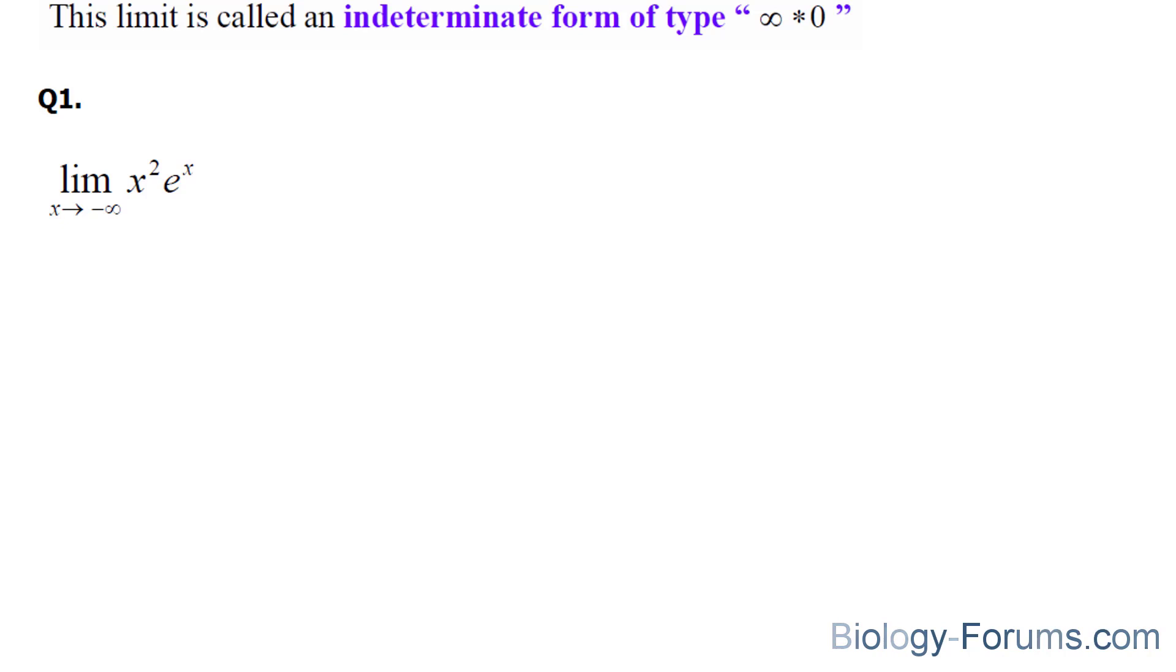Now the goal here is to rewrite this function in such a way where it has a numerator and a denominator. You have two options. You can either write it as e to the power of x over x to the power of negative 2, or you can write it as x to the power of 2 over e to the power of negative x. Let's use this one.